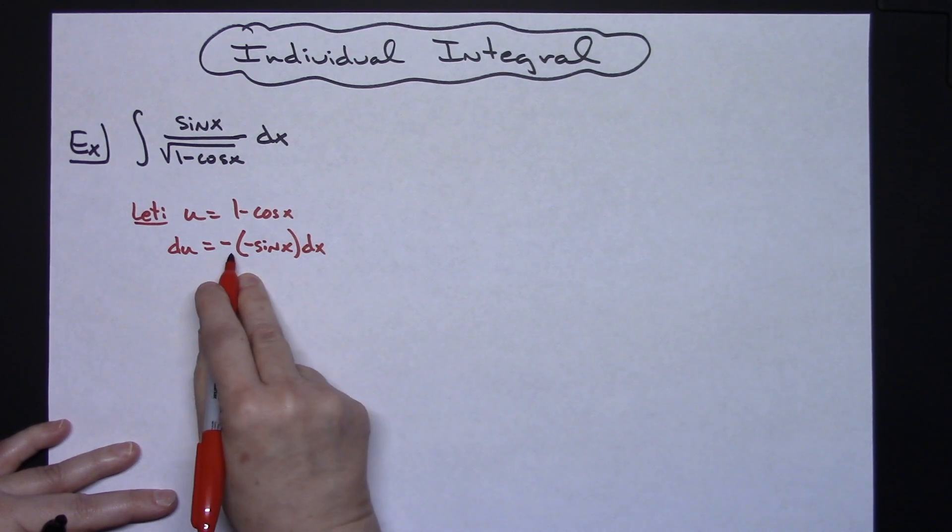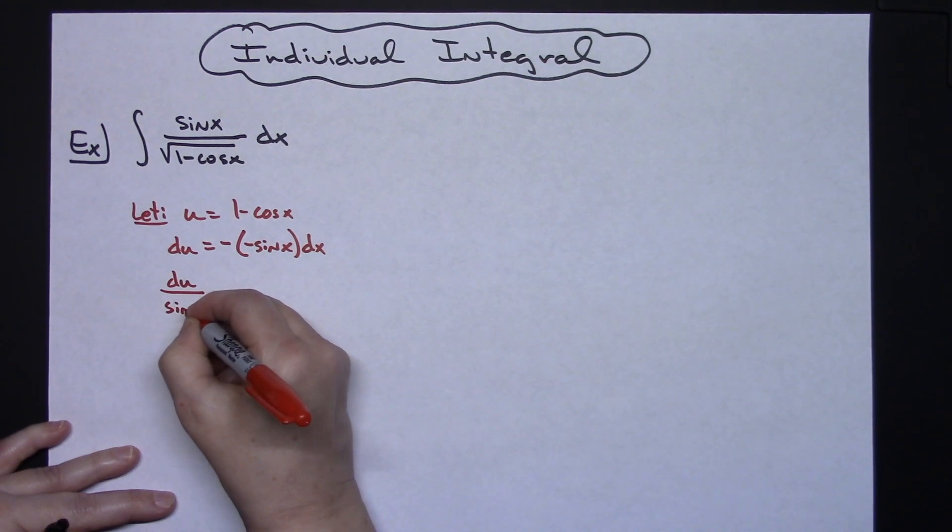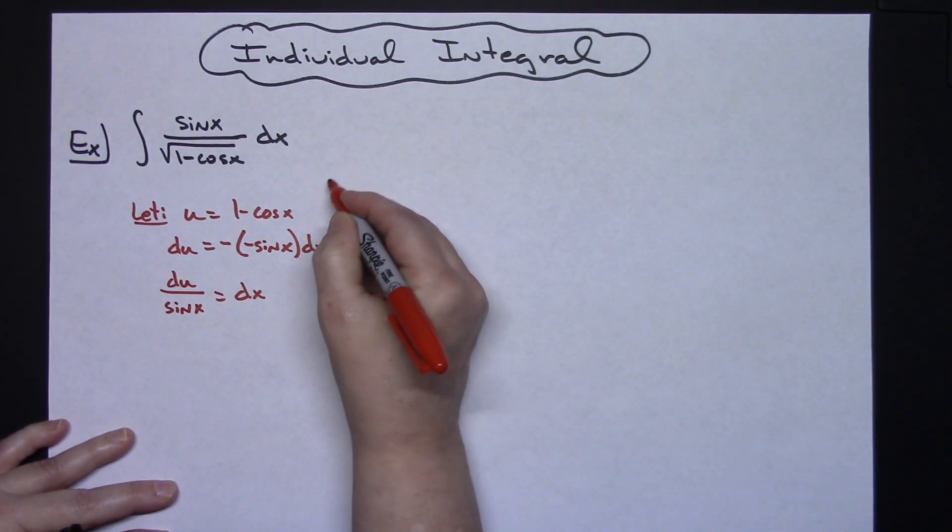And I am going to want to solve for dx so I'll just divide both sides by that positive sine x. So I'll have du over sine x is equal to dx.